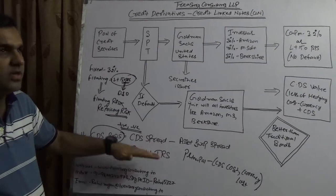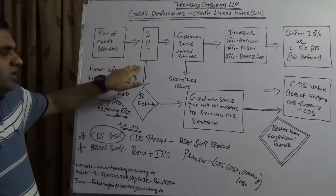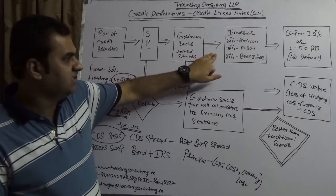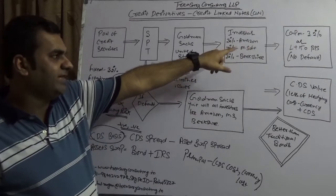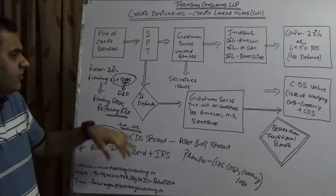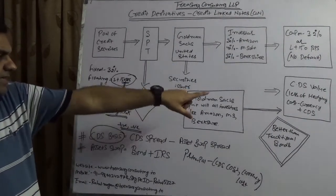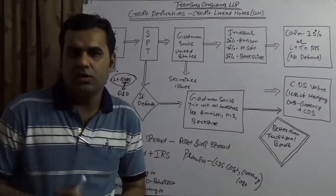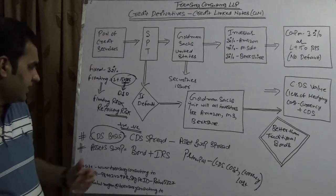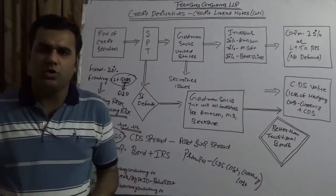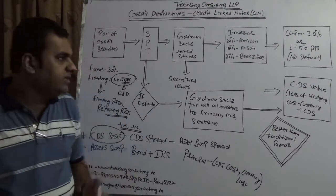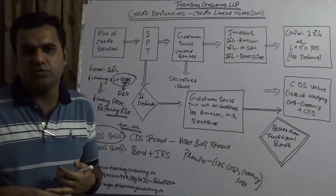To summarize: a pool of securities creates an SPT (Special Purpose Trust), owned by Goldman Sachs, which is offloaded to three investors — Amazon, Microsoft, and Berkshire — with two options: fixed 3.2% or LIBOR plus 150 basis points. If no default occurs, payments continue. If there is a default, Goldman Sachs exits and deducts the principal minus CDS cost and any loss due to delinquency. This is credit linked notes — linking the performance of fixed income securities to credit. It can be hedged using OIS, which will be covered in an upcoming video.